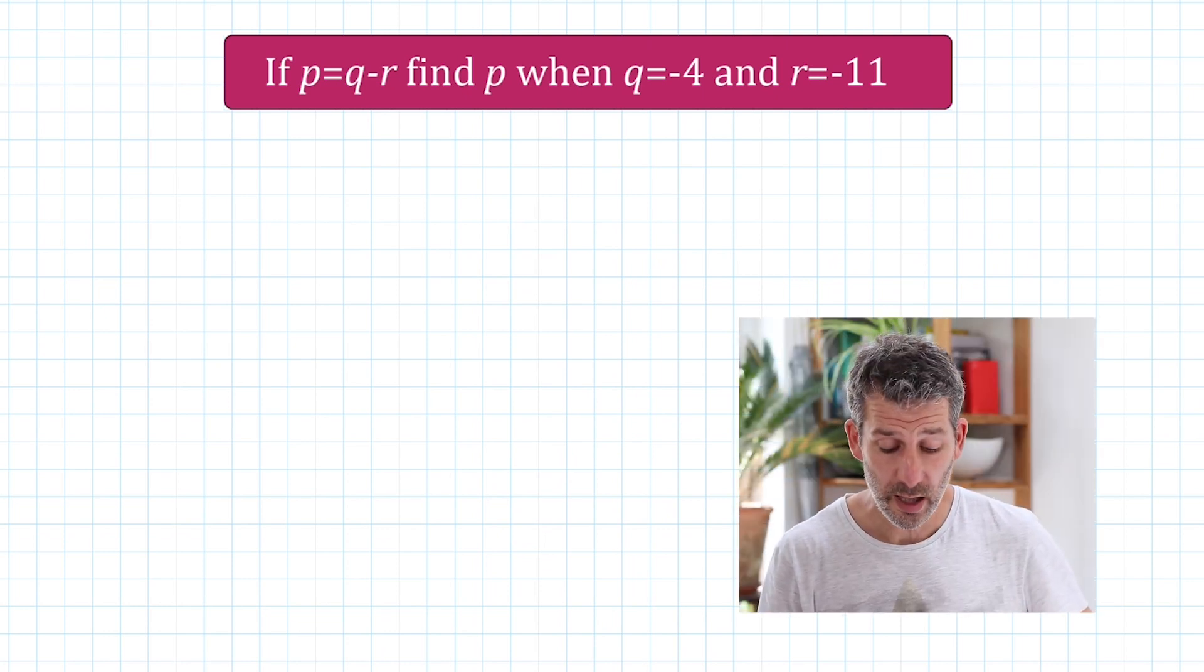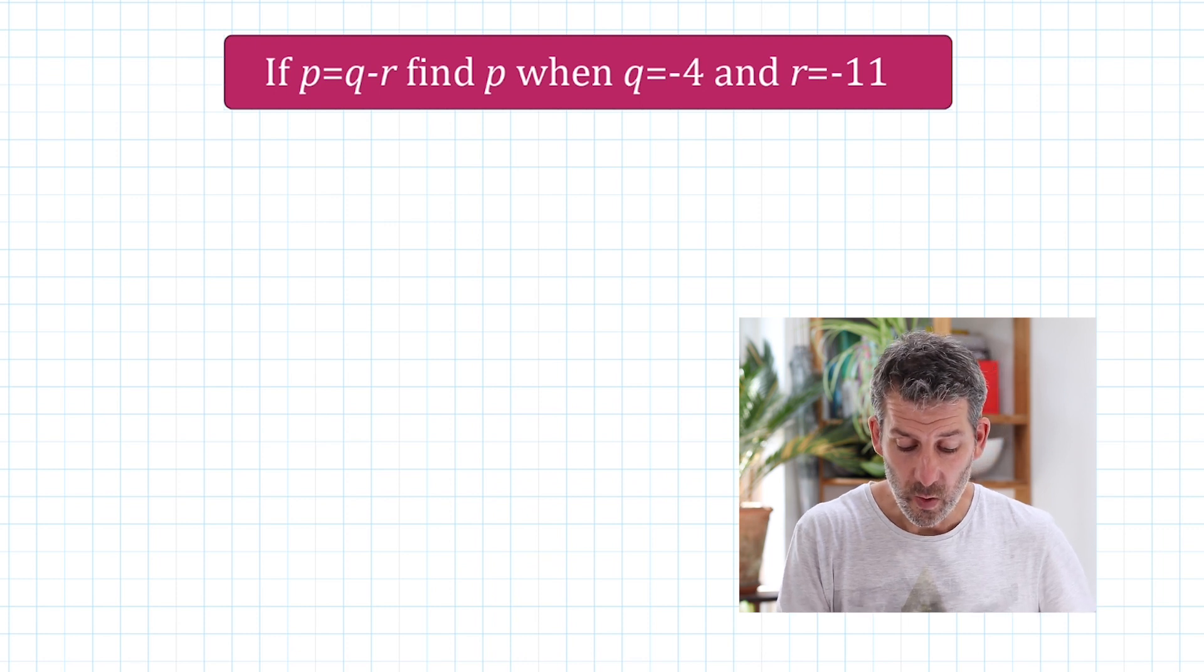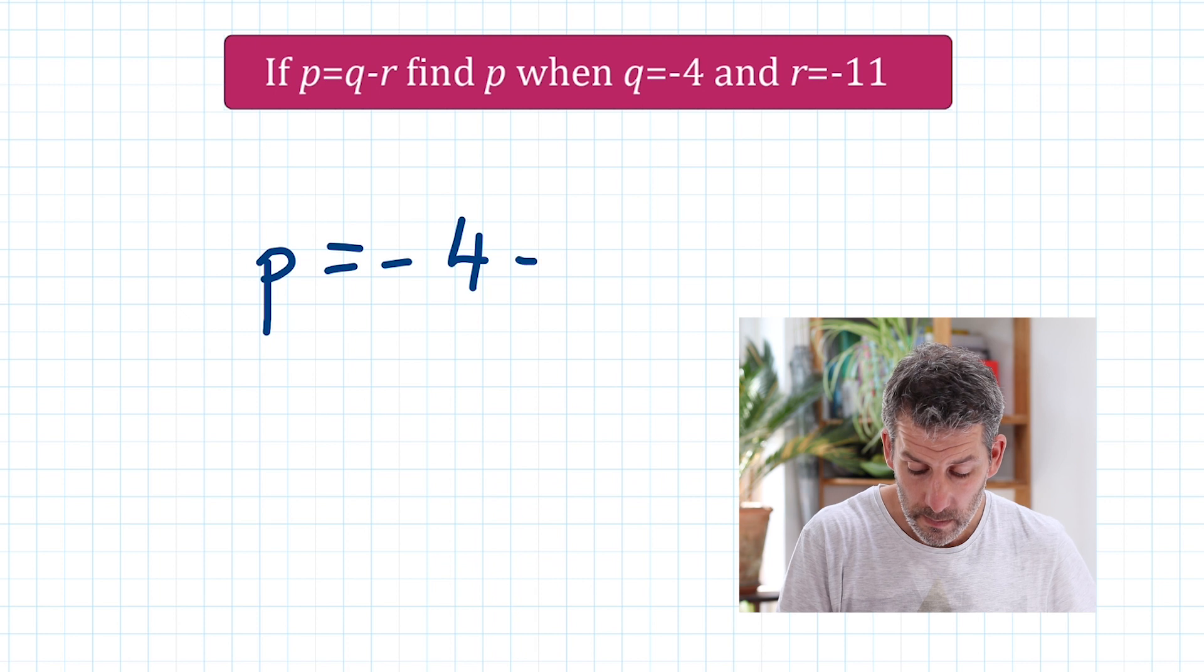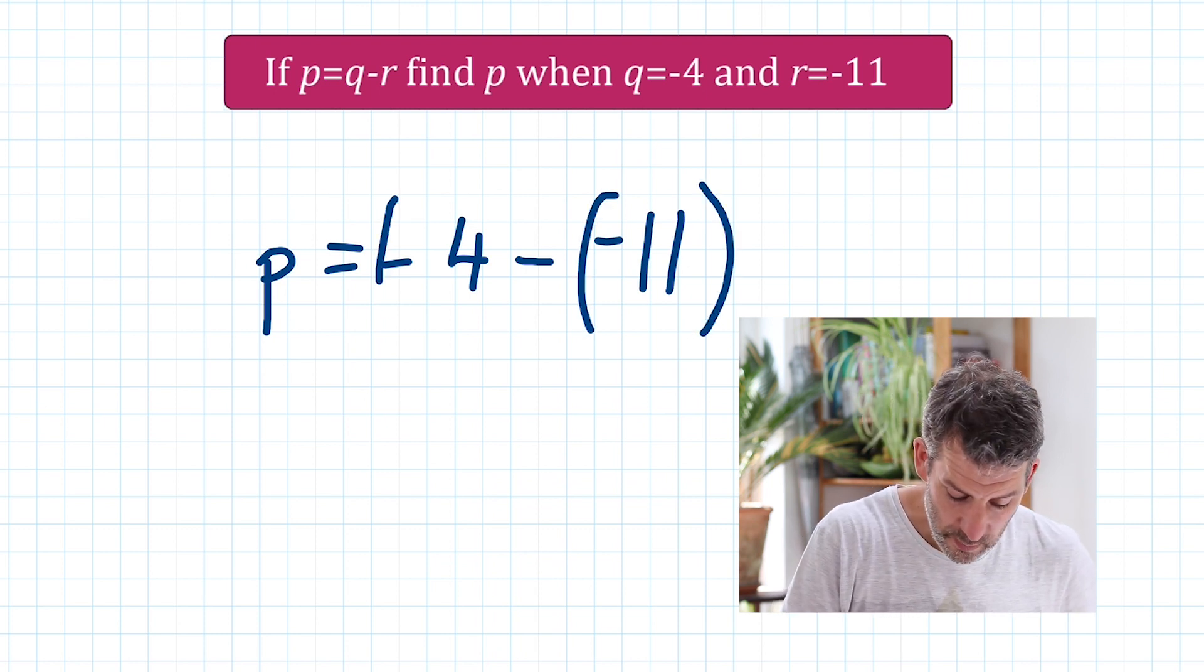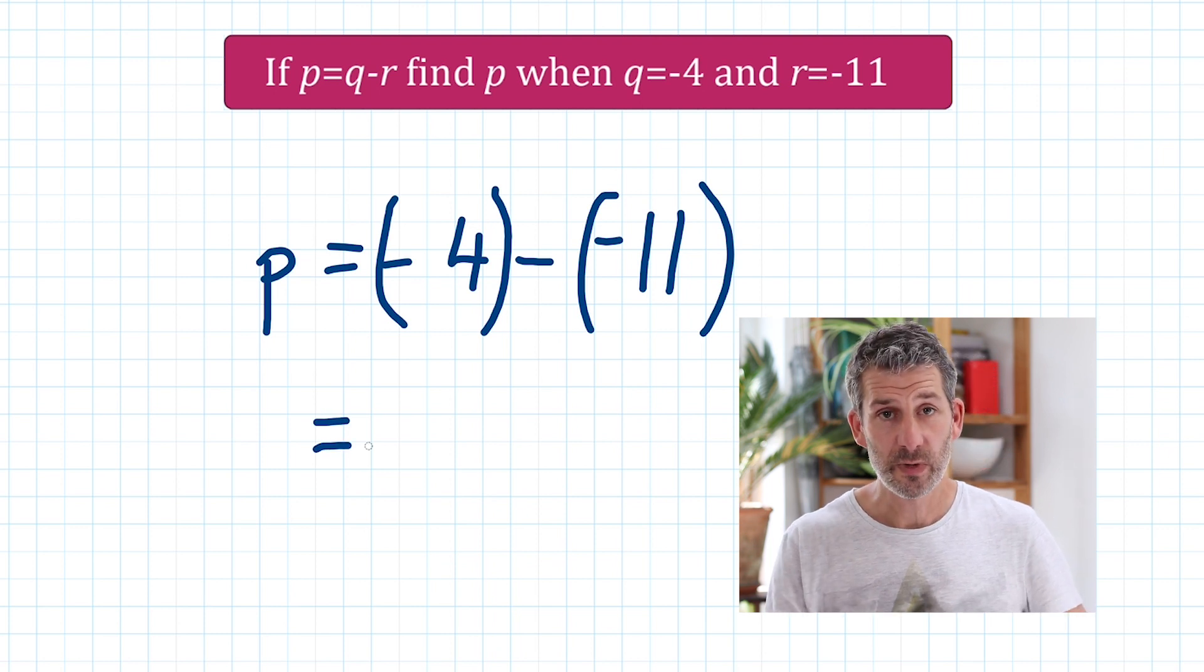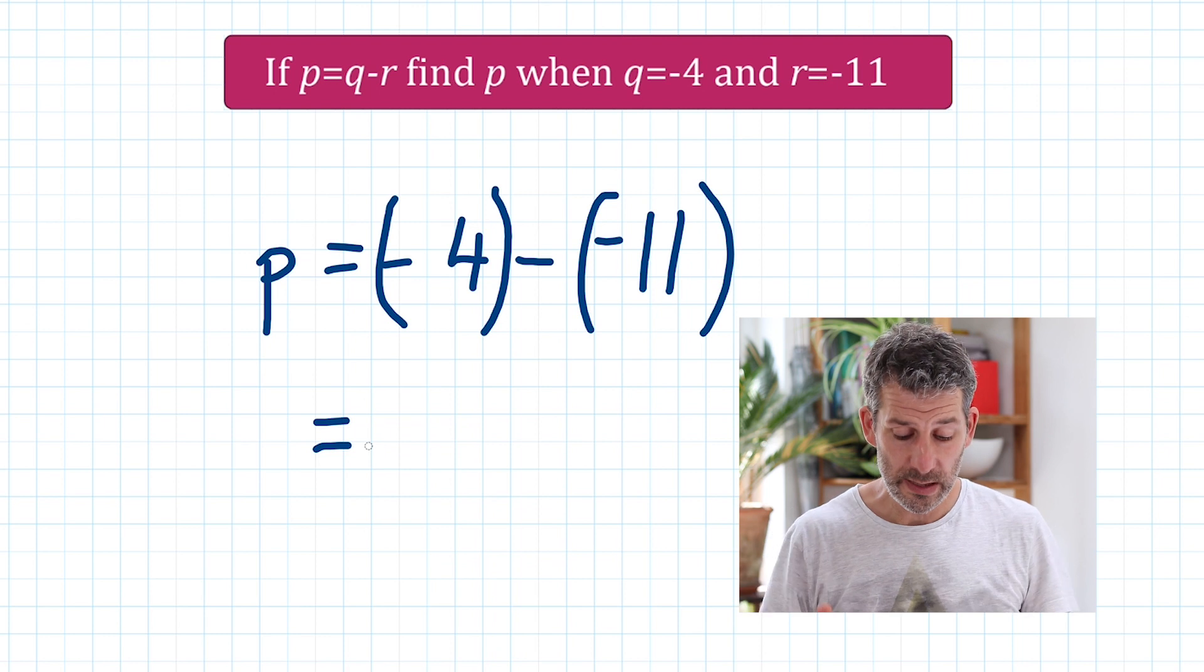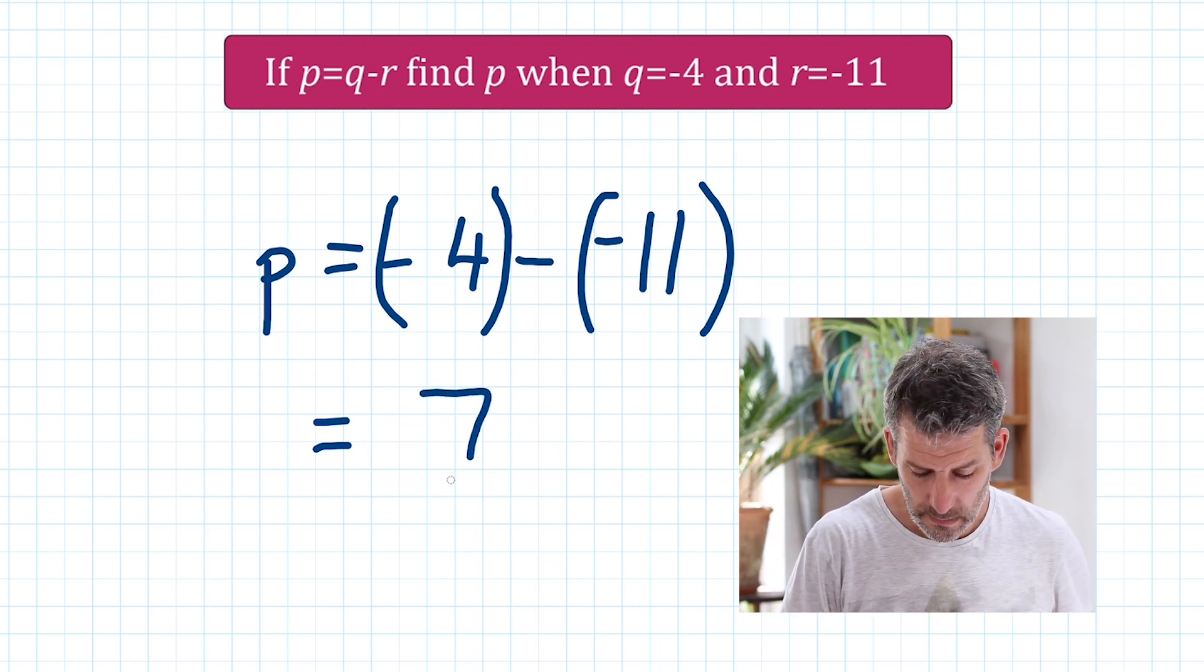If P equals Q minus R, find P when Q is equal to negative 4 and R is equal to negative 11. All right. We've got some negatives here. So all we're going to do, replace the letters in our formula with the actual numbers that we've been given. So to find P, we're going to do P is equal to, well, Q is negative 4. So negative 4 minus R is negative 11. So negative 4 minus negative 11. I'll put them both in brackets. Negative 4 minus negative 11. When you are subtracting a negative number, as we are here, we're subtracting that negative 11, that actually has the effect of adding that number on. It moves you up the number line 11 places. So if we're starting at negative 4 and we're moving up the number line 11 places, well, if we move up 4 places, it takes us to 0. And we've got another 7 places still to go. So we're going to end up at 7. So P is equal to 7.